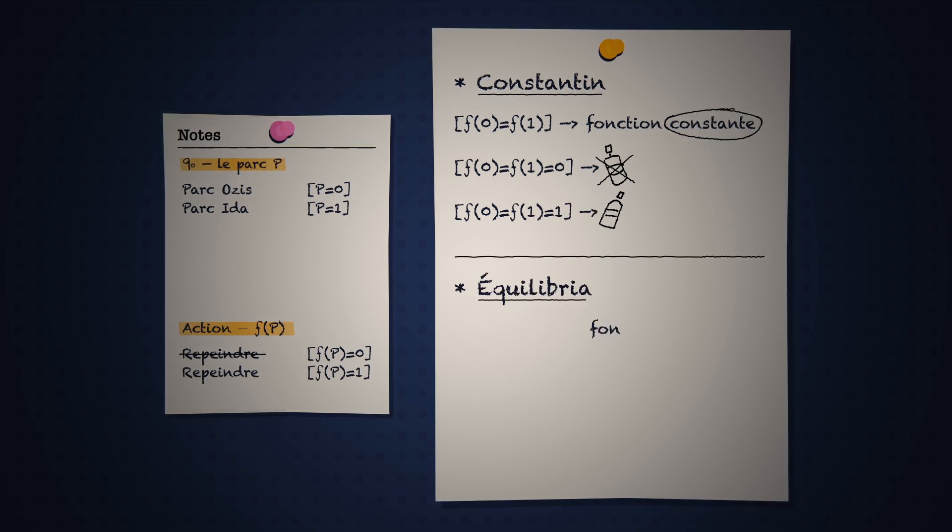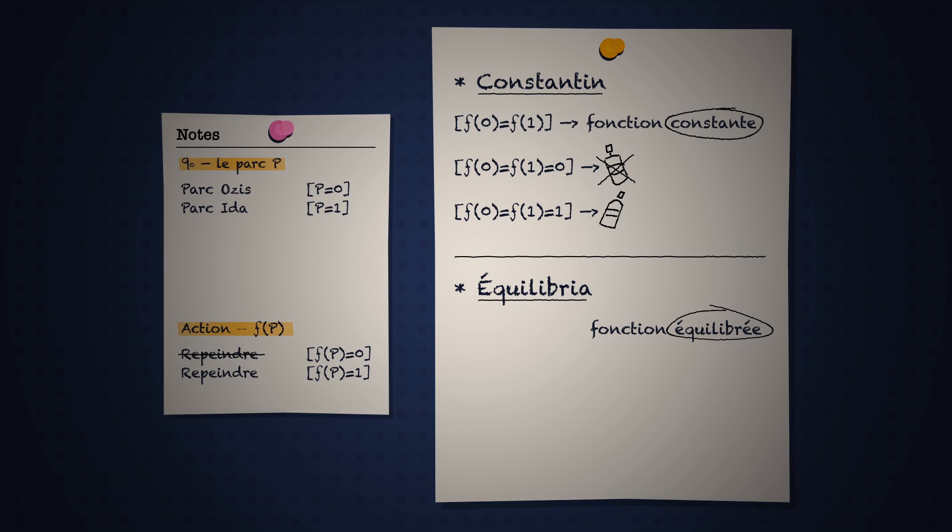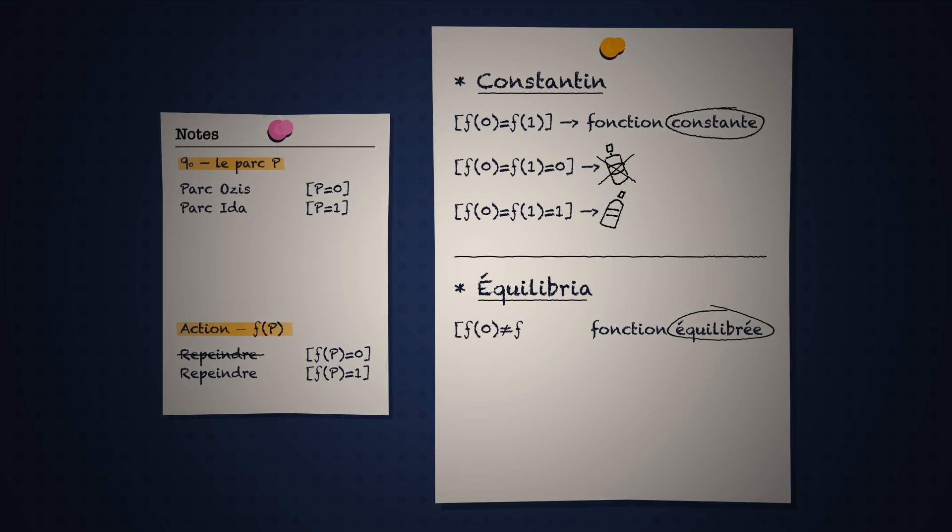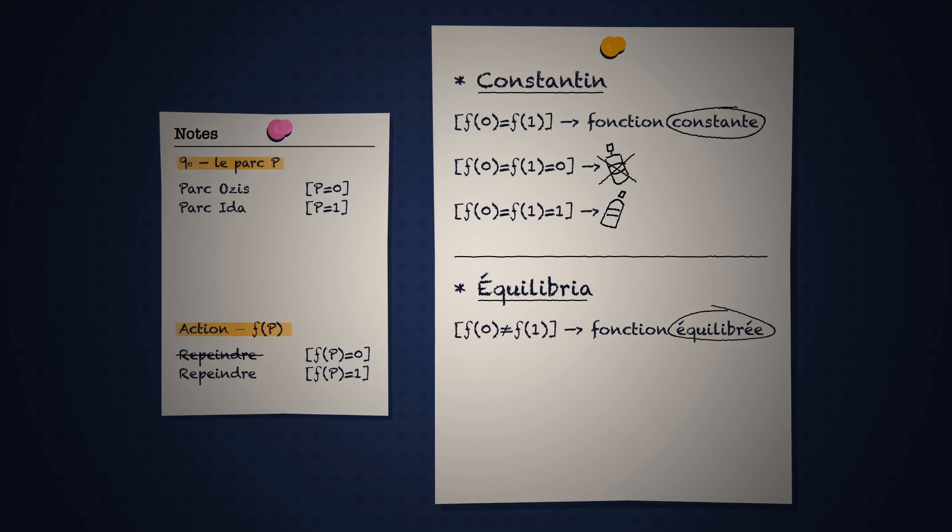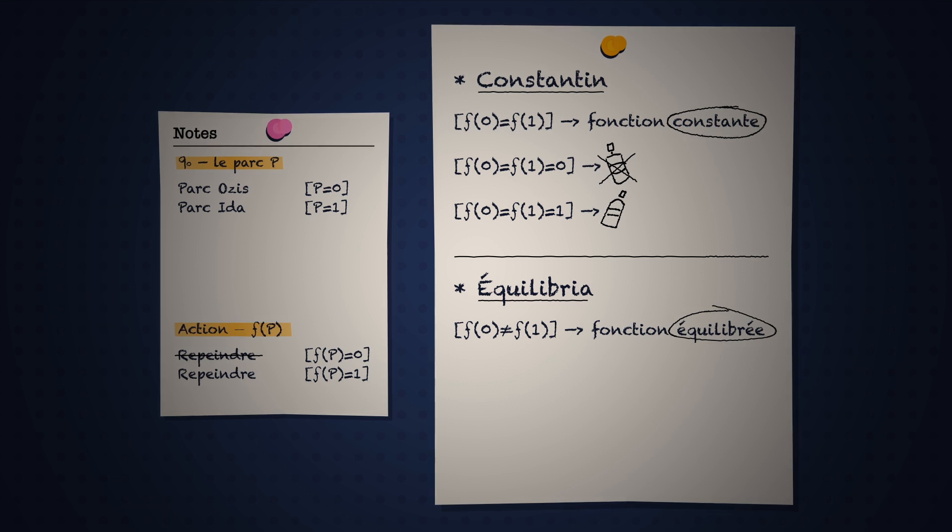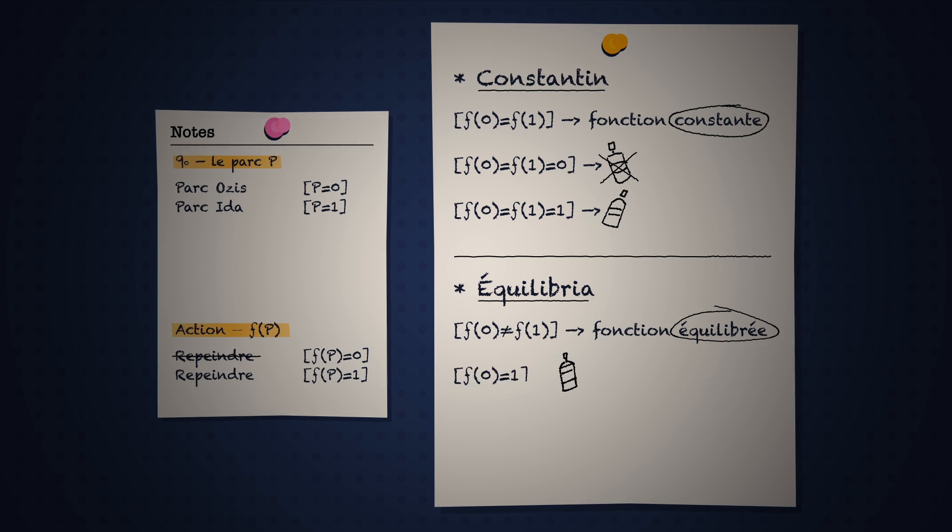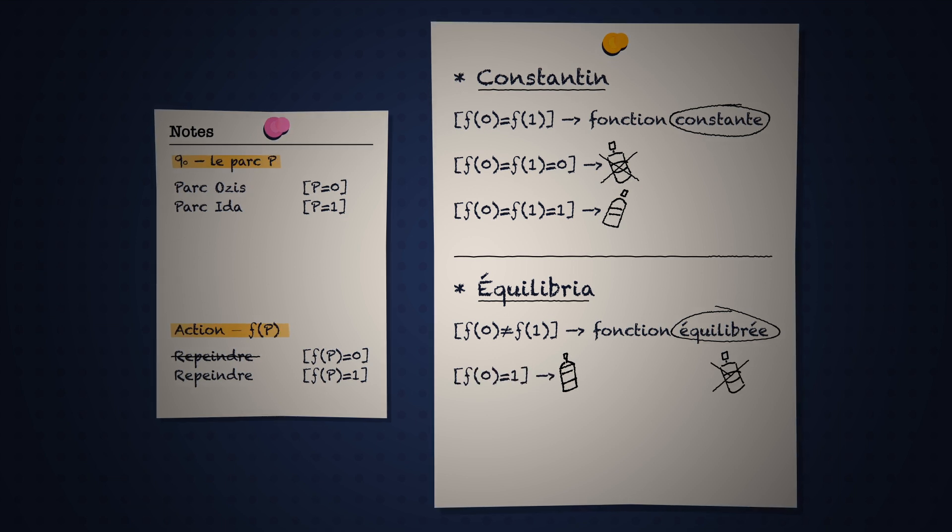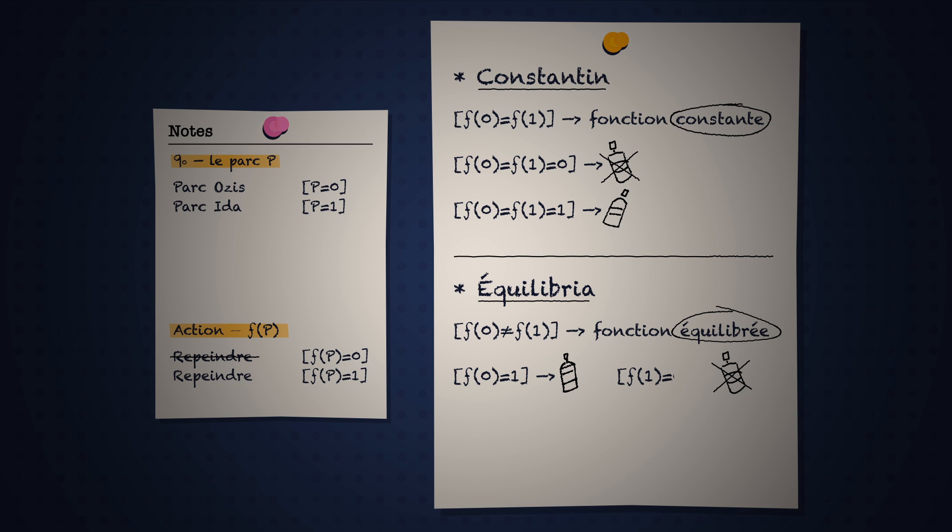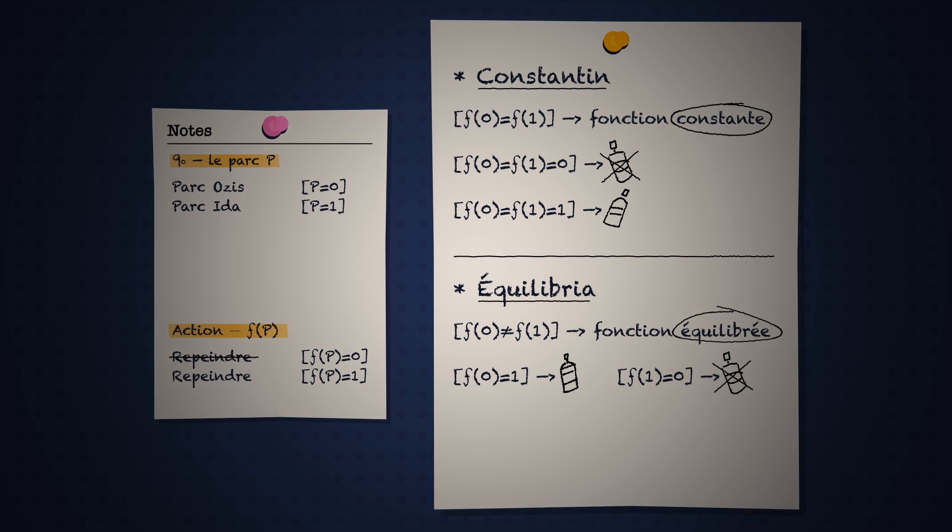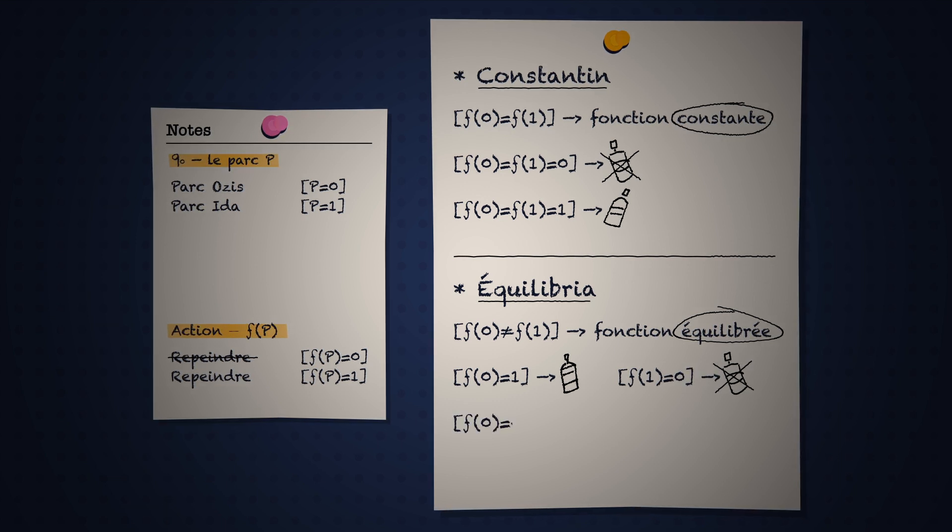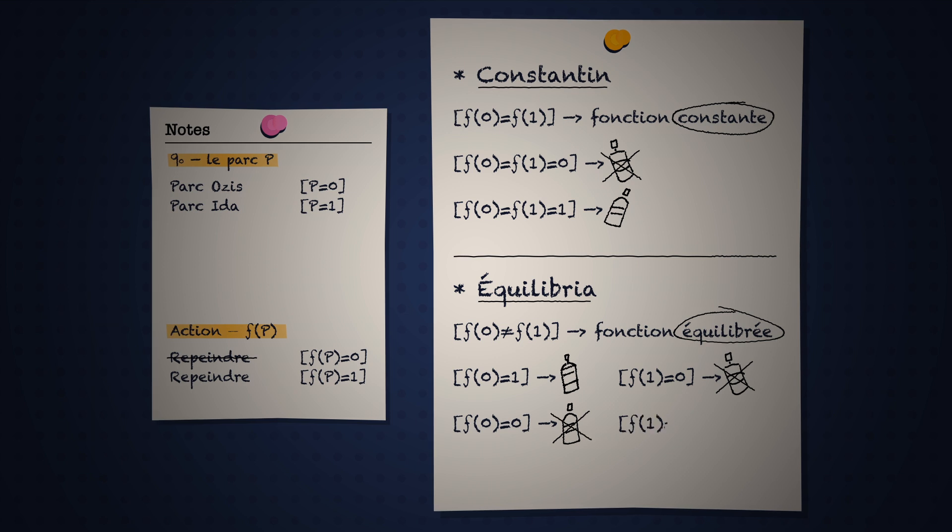Equilibria utilise plutôt une fonction dite équilibrée, c'est-à-dire que f de 0 n'égale pas f de 1. Elle repeint toujours la statue d'un seul des deux parcs. Si elle repeint la statue du parc Osis, c'est que f de 0 égale 1, et elle ne repeint pas celle du parc Ida car f de 1 égale 0. Le contraire se produit quand f de 0 égale 0 et f de 1 égale 1.